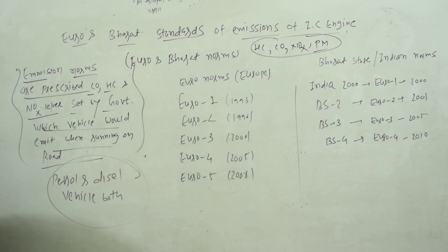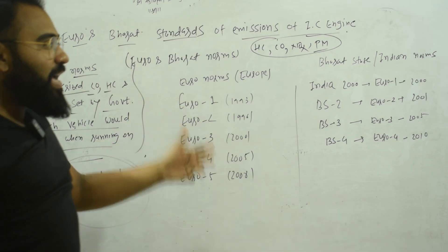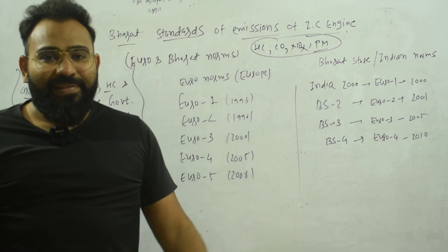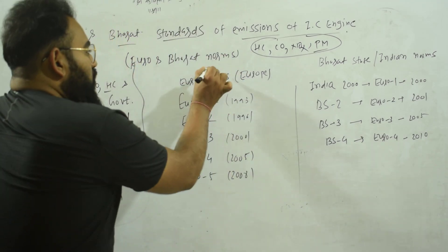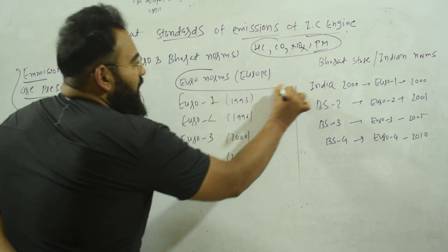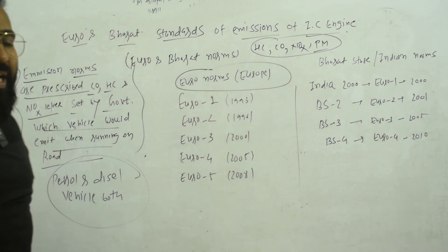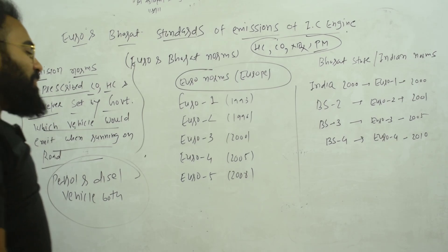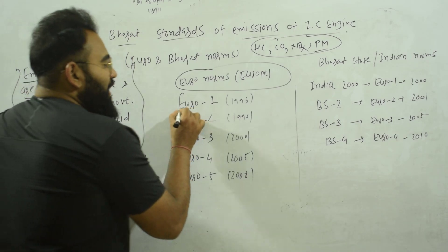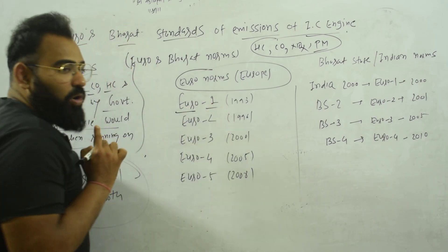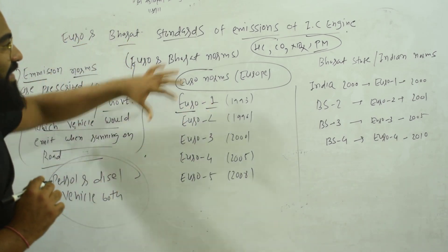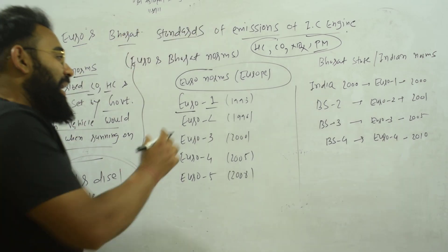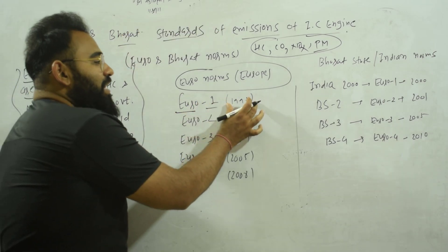Who will follow Euro norms? Obviously, European countries will follow Euro norms. Euro norms means the norms that are purely for Europe, regarding the prescribed limits for these particular harmful emissions. These rules were implemented starting in 1993.